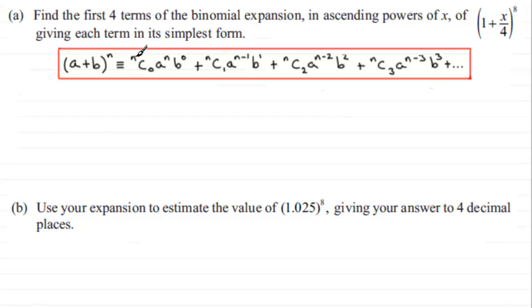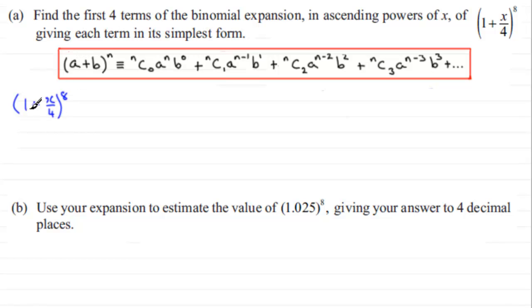The expansion is: nC0 · a^n · b^0 + nC1 · a^(n−1) · b^1, and so on. In this example, we have (1 + x/4)^8, so a is 1, b is x/4, and the power n, which is a positive integer, is 8.